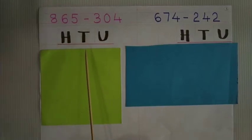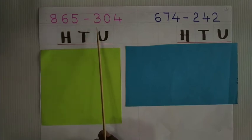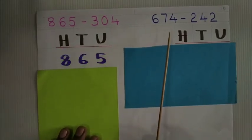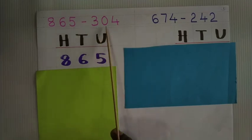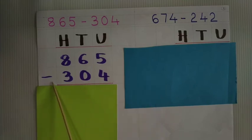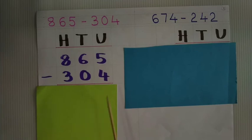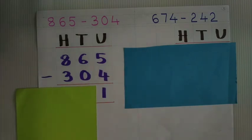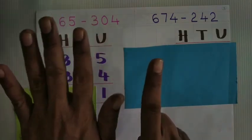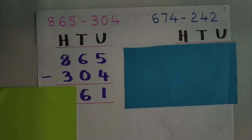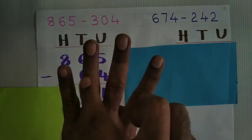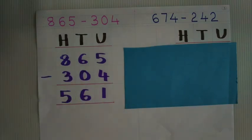Let's arrange these numbers in vertical order and solve. 865 minus 304. Write 865 first, then minus 304. Check that the minus sign is there and the place values are properly written. 5 minus 4 is 1. 6 minus 0 — 0 means nothing to take out, so you get the same number: 6. 8 minus 3 is 5. Answer is 561.